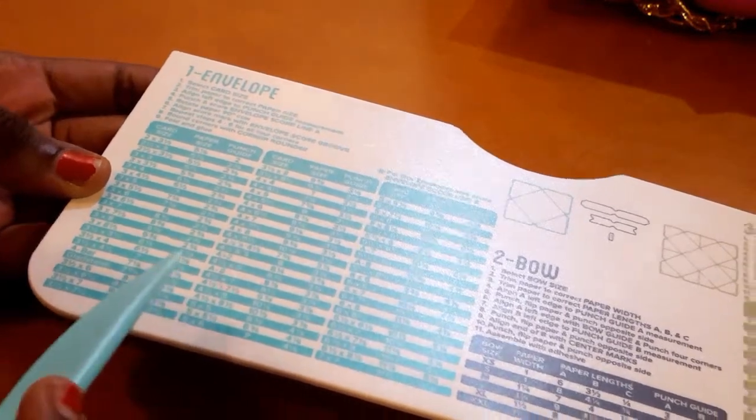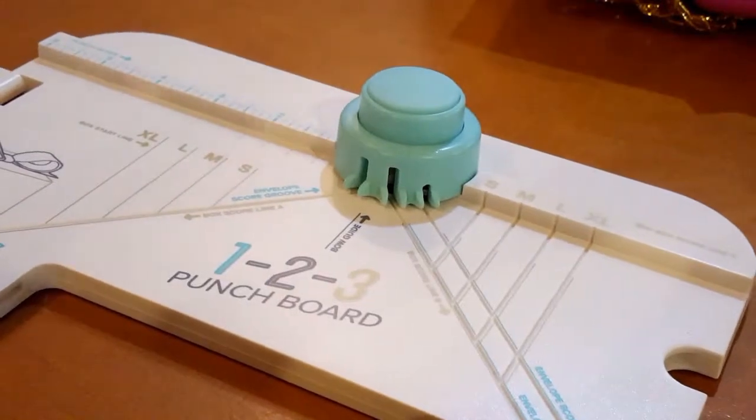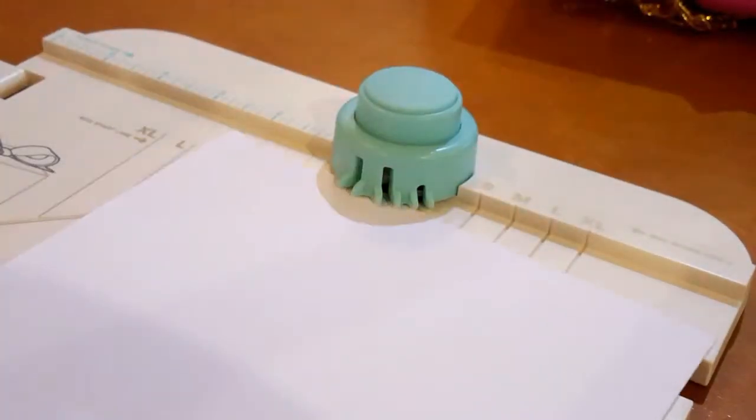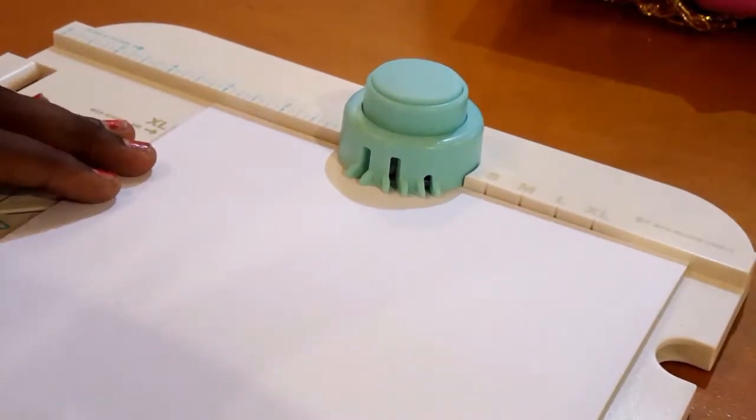So we are going over to the part that has the score and the measurements, and the first thing that you do is cut your paper to size which would be 7 and a quarter by 7 and a quarter. It's square and then we line up the left edge at the punch guide measurement which is 3 and 1 eighths of an inch.